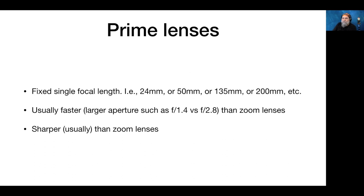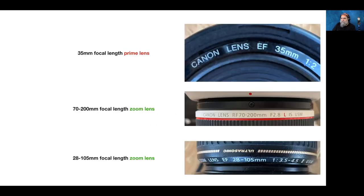Prime lenses are fixed single focal length lenses — like a 24mm, 50mm, or 200mm. They're usually faster and a bit sharper than zoom lenses, though many of today's zoom lenses are done very well. The 35mm in our example is a prime lens with only one focal length, while the 70–200 and 28–105 are zoom lenses.